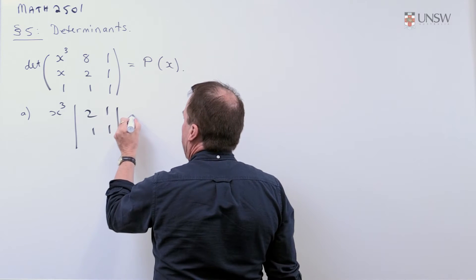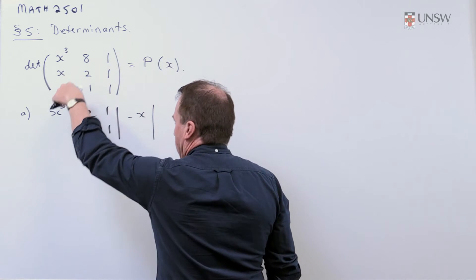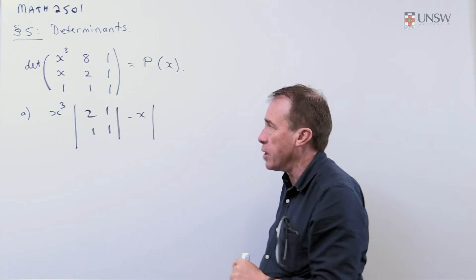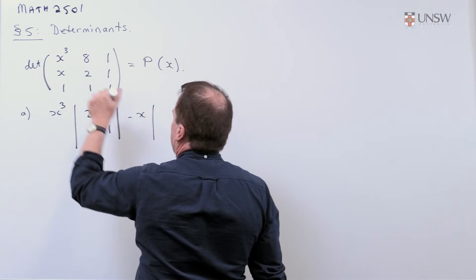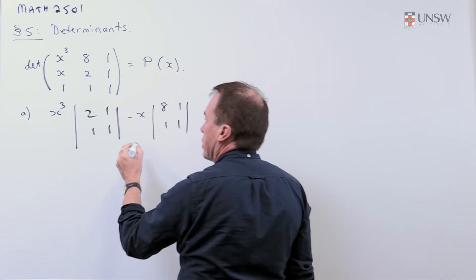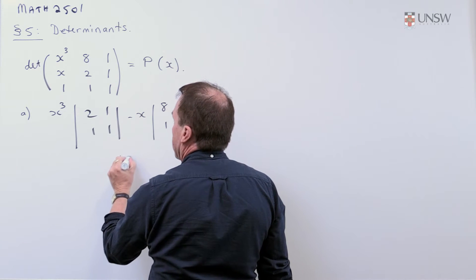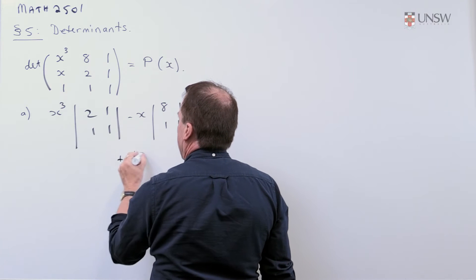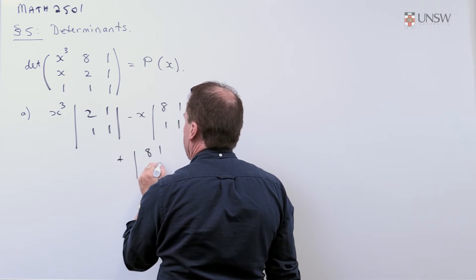And then you're going to get minus x, expanding down the first column, so plus, minus, plus. So minus x, cross out the row and column, you get 8, 1, 1, 8, which again is a constant. And then you're going to get plus the 1 at the bottom. Cross out the row and column, you get 8, 1, 2, 1.